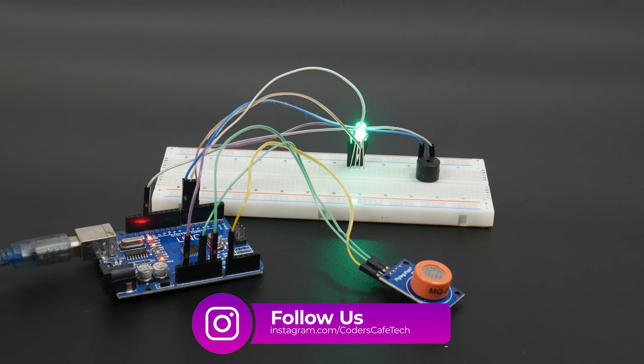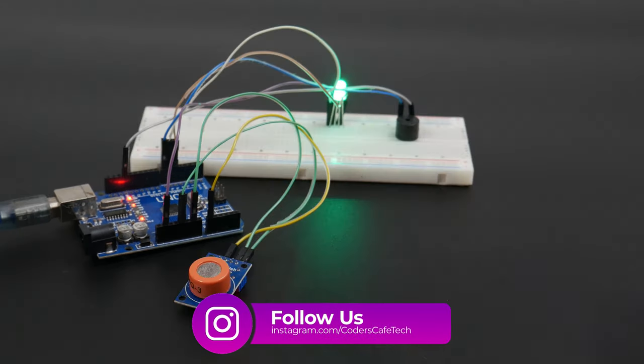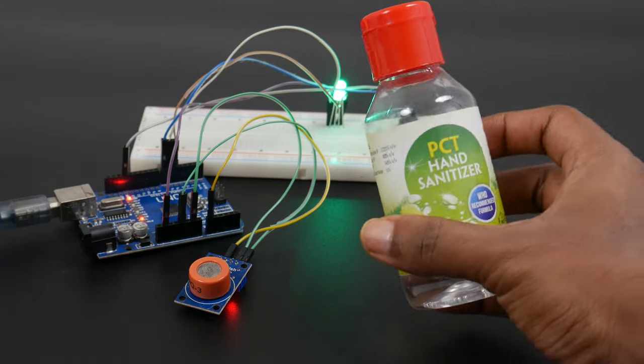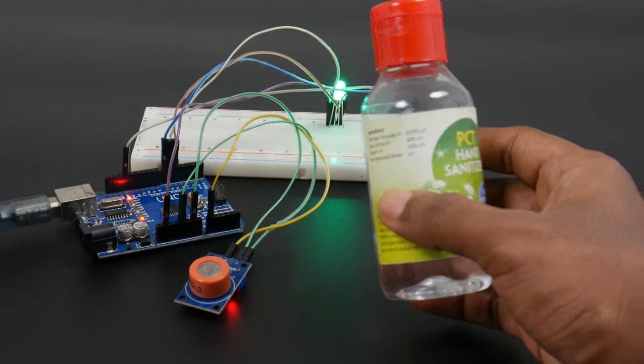As you can see, the green light is indicating the absence of alcohol. Now to test MQ3 we are using a sample of sanitizer, which is an easily available source of alcohol.